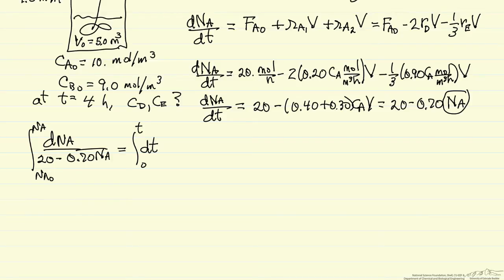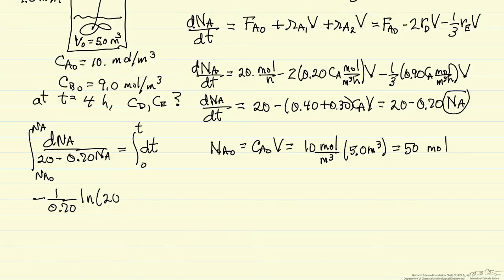With the variables separated and integration limits, at t equals zero I need to know the value of N_A0. That's C_A0 times volume, and we're given both values. Now I can integrate and end up with 1/0.70 times the log of this denominator, evaluated between the two limits N_A0 and N_A.